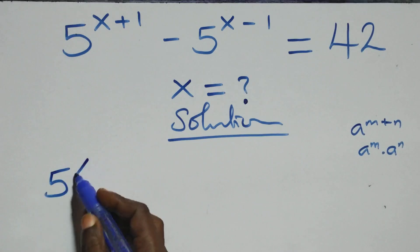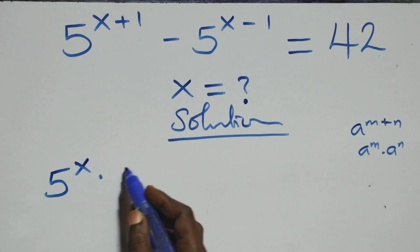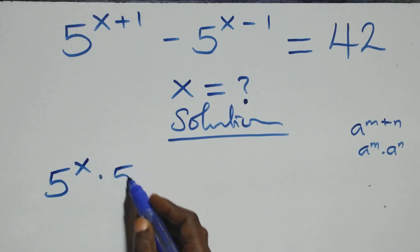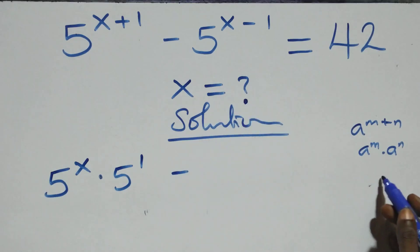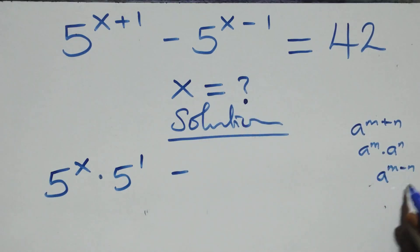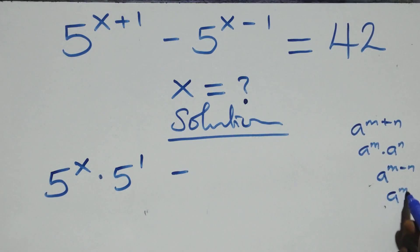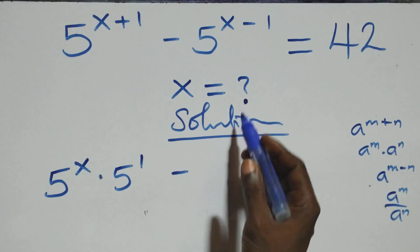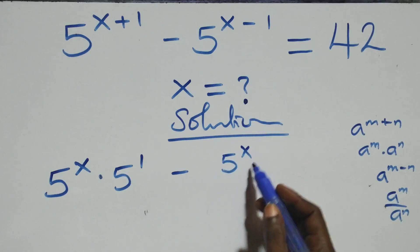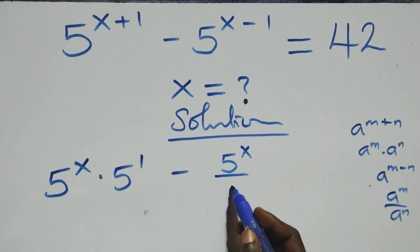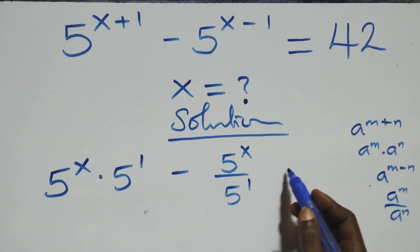So this becomes 5 raised to power x times 5 raised to power 1. Also, in the following zone we have a raised to power n minus n, which is the same thing as a raised to power n over a raised to power n. So here we have 5 raised to power x over 5 raised to power 1.